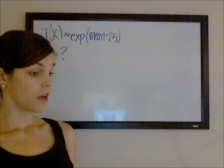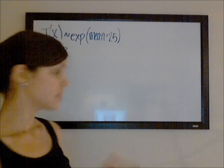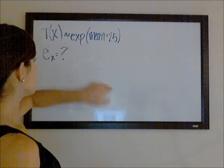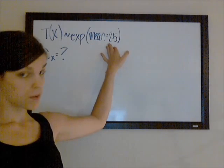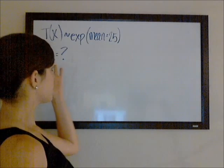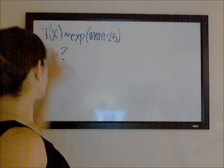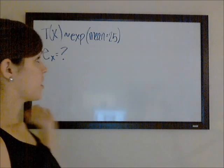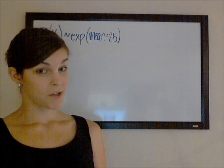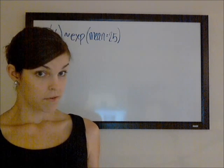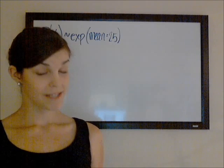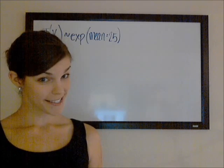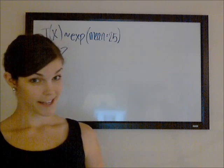So the exponential distribution is memoryless, so if our future lifetime is exponentially distributed, the mean future lifetime is always going to be 25, no matter what age X you're looking at. If we're looking at our life age X 10 years from now, we expect him to live 25 more years. If we're looking 25 years from now, we still expect him to live 25 more years. So not very realistic, but it is pretty nice for calculating things.